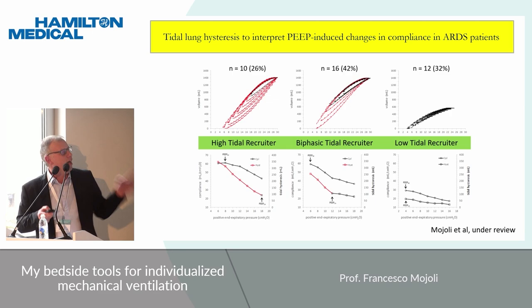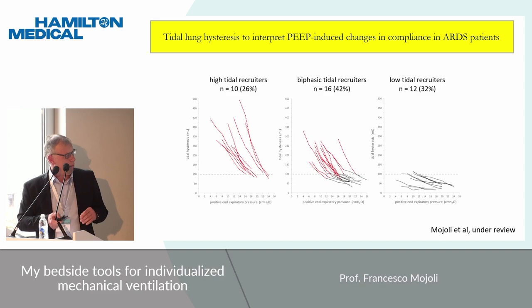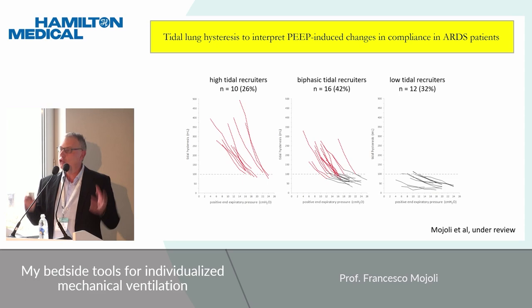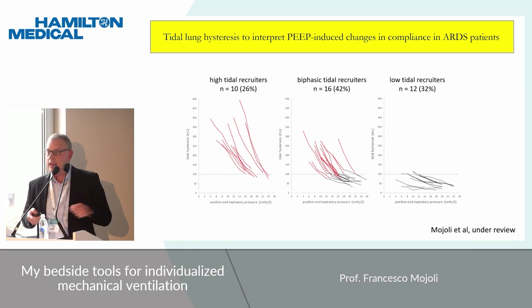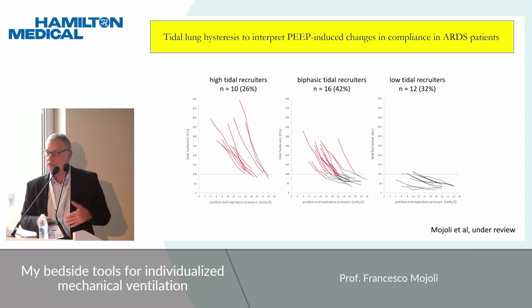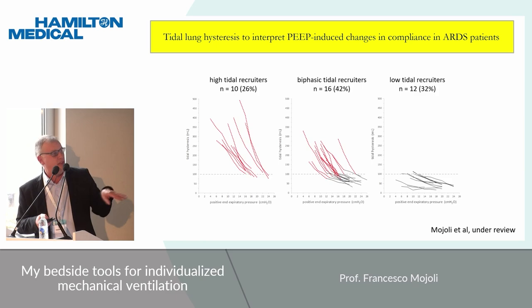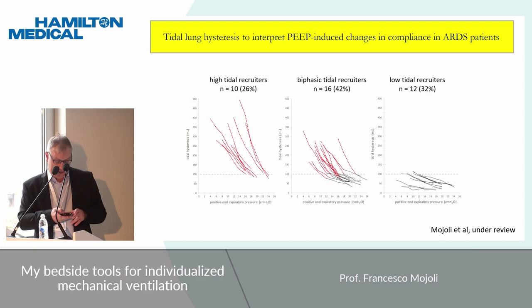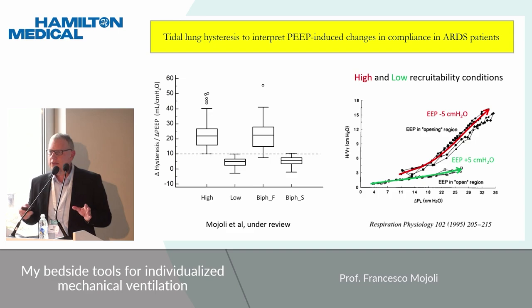In the end, we observed three different patterns — high tidal recruitment, low tidal recruitment, and the biphasic one — but only two rates of change of tidal hysteresis when PIP was step by step decreased. We observed a high rate, a fast increase of tidal hysteresis in red, in all tidal recruiters and in the fast phase of biphasic patients, and a very slow rate in low tidal recruiters and in the slow phase of the biphasic pattern.